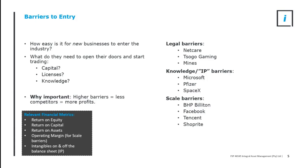Then we shift to knowledge or intellectual property barriers to entry. These are literally: you know how to do something that someone else doesn't know how to do. Think of Microsoft — they've got all the code for Microsoft Windows. Think of Pfizer — they've got all the formulations and patents for their range of ethical pharmaceuticals and vaccines, and even the mRNA COVID vaccine. Think of SpaceX — it's literally rocket science. These are knowledge barriers to entry. If you don't know how to do these things, you just can't compete.